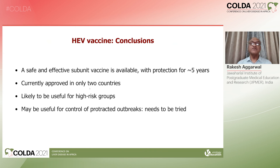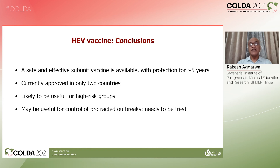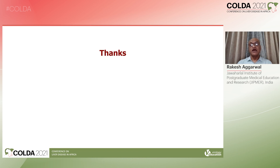So friends, we have a safe and effective subunit vaccine for hepatitis E which gives protection for at least five years. It is currently approved in only two countries. It seems it will be useful in high-risk groups, but the greater use will lie in finding out whether it can help control protracted outbreaks of hepatitis E. Thank you for your attention.